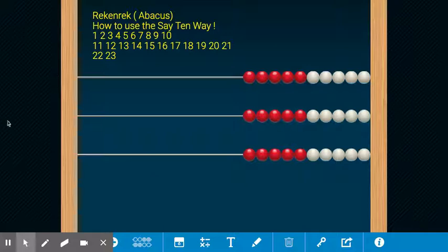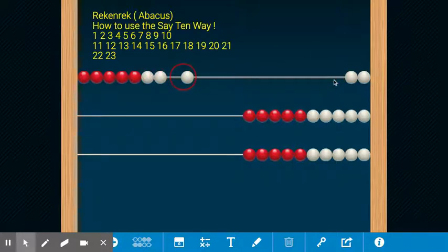Now usually we would count one, two, three, four, five, six, seven, eight, nine, ten. And when we added another we would usually say eleven.